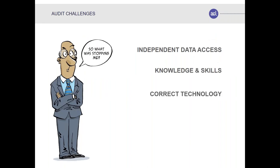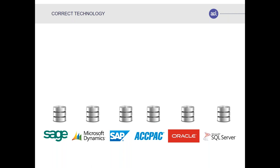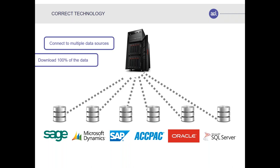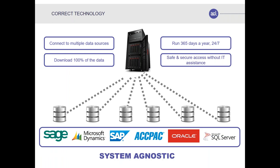The third big challenge was having the right technology. Most auditing is done on a laptop, which is absurd given the volume of data involved. The right technology for an audit function would have a server connected directly to each ERP system — whether SAP, Oracle, Microsoft, or Sage — independently and continuously downloading 100% of the data, running 365 days a year, and being system agnostic. This means audit would have access to every piece of data in the organization based on the audit schedule, not on IT's convenience.